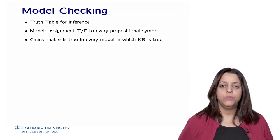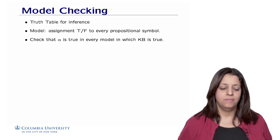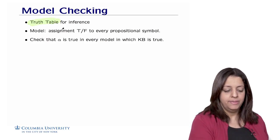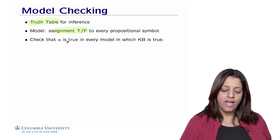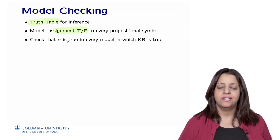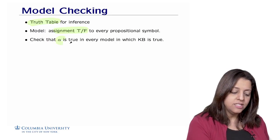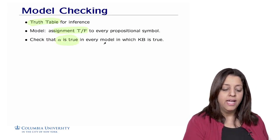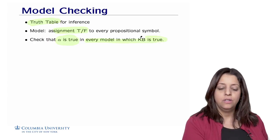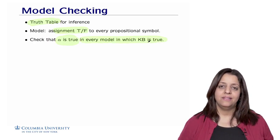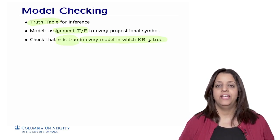Let's get started with model checking, in which we are going to enumerate all possible models using truth tables. A model is simply an assignment true or false to every propositional symbol in the sentence or formula. What we need to do is check that the formula or sentence alpha is true in every model in which the knowledge base is true. We're going to check by examining this truth table whether alpha is actually true whenever KB is true.